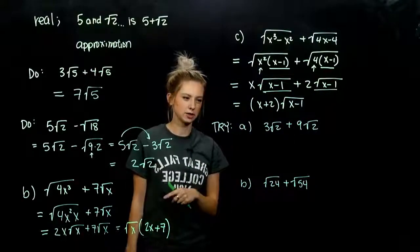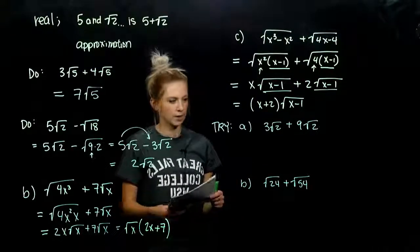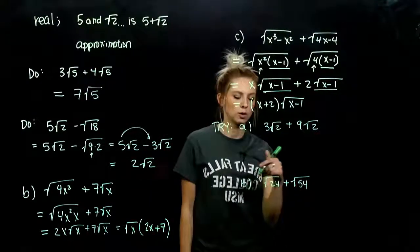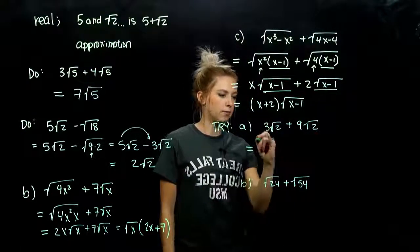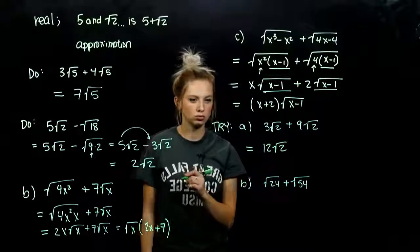So go ahead and take those next two. Add them together. Simplify as far as we can go. So the first one, we have common radicands. We can combine them together. So three factors and another nine will give me 12 factors of root 2. Done.